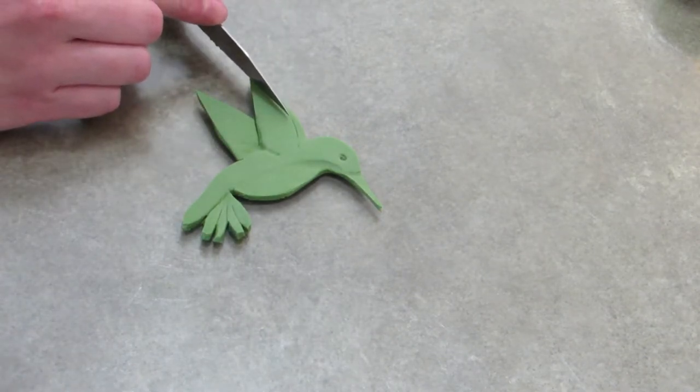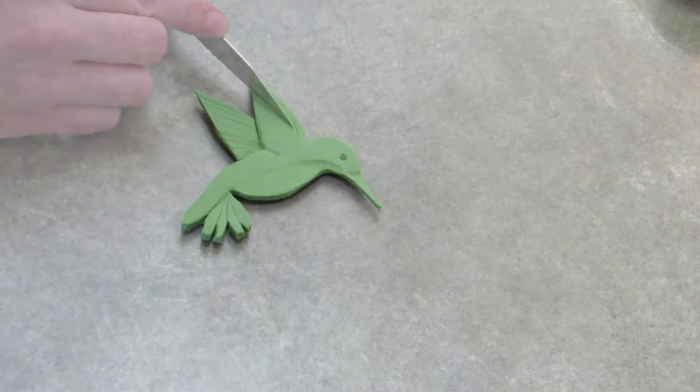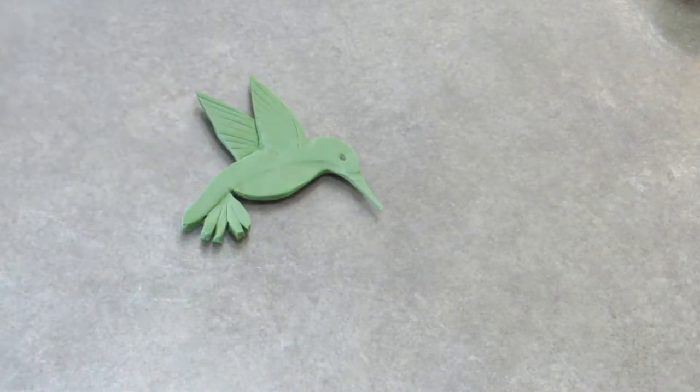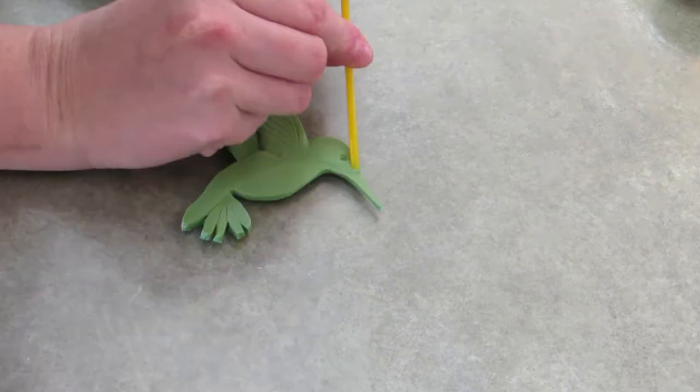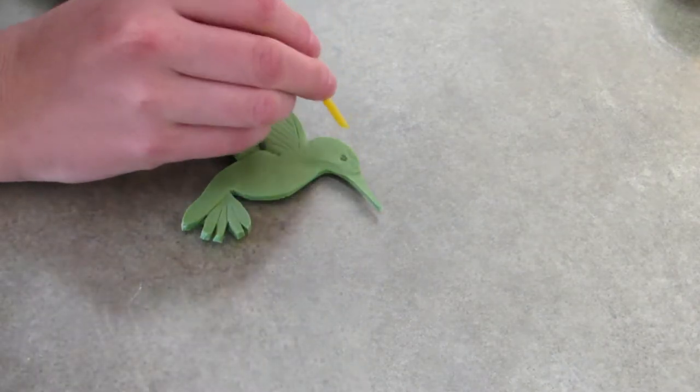This is where it's going to start to get fun. I have a straw that I got from a coffee shop or something. It's got a little sharp point on it, and I'm just putting prints down the back, the head, and down the tail of the hummingbird.